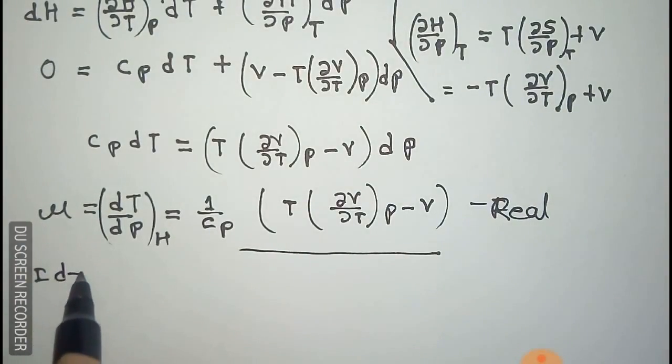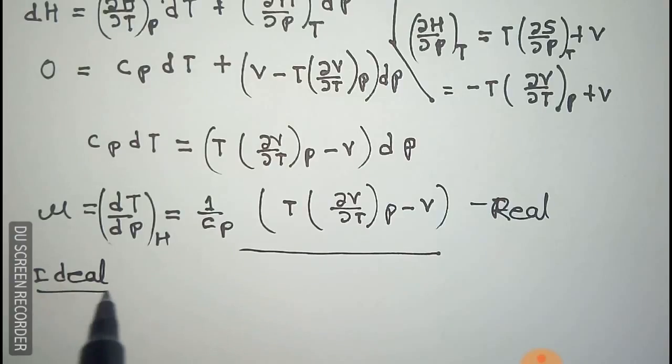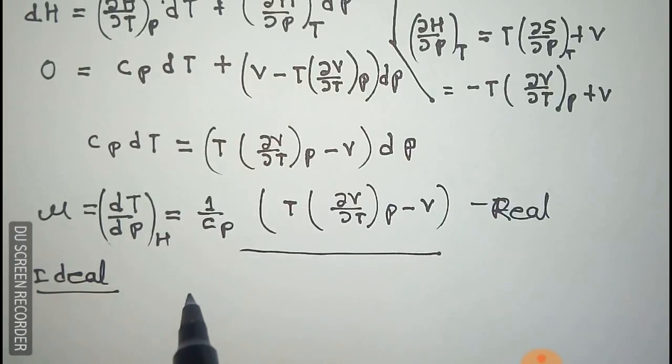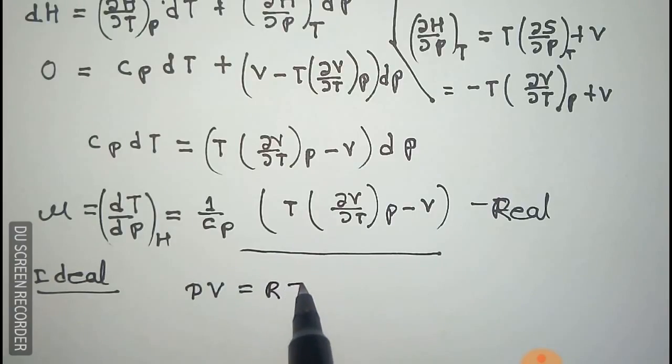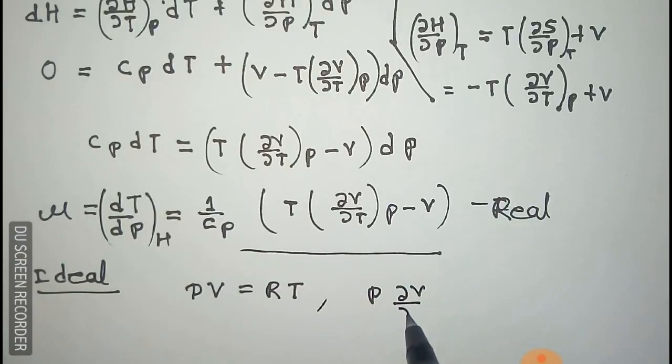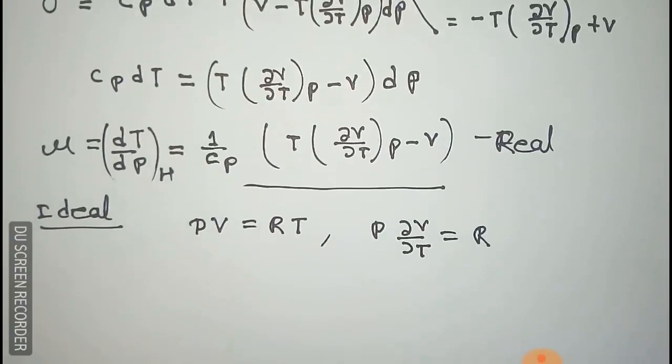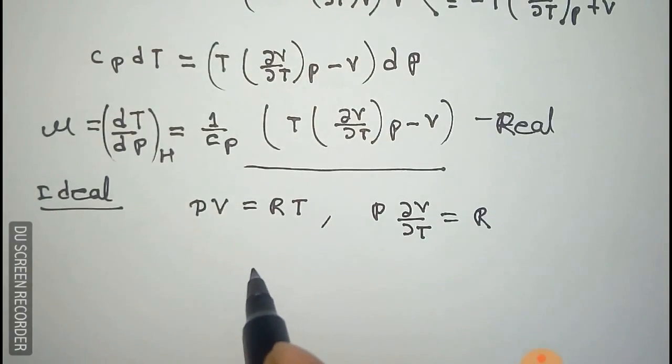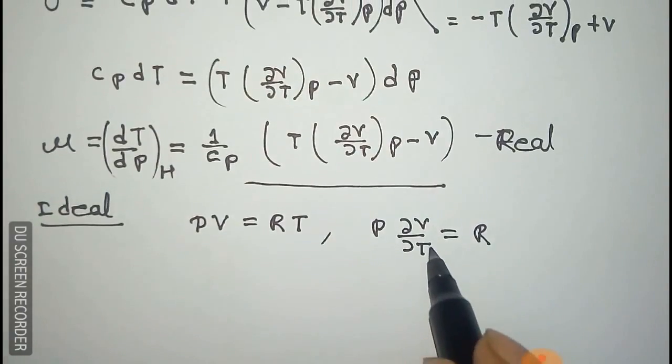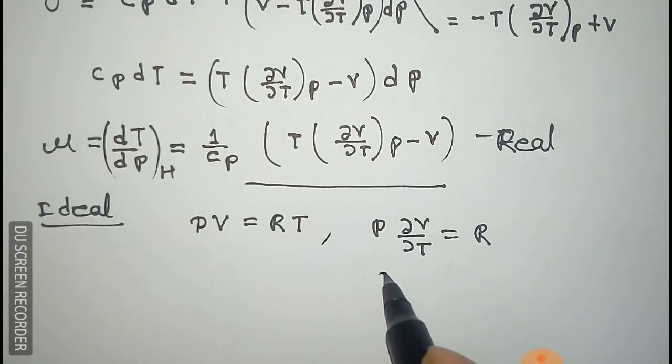Now we derive it for ideal gas. We know that for ideal gas PV equals RT for one mole. After differentiating with respect to T, we get del V del T equals R by P.